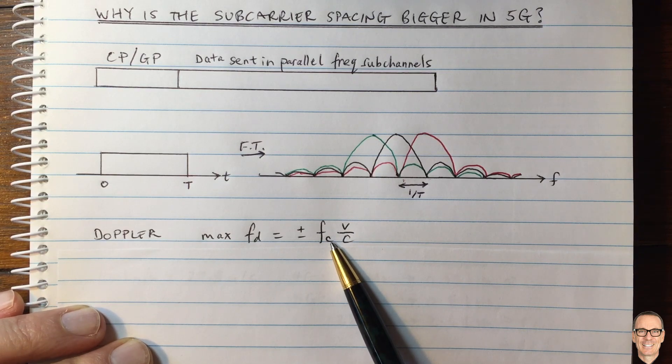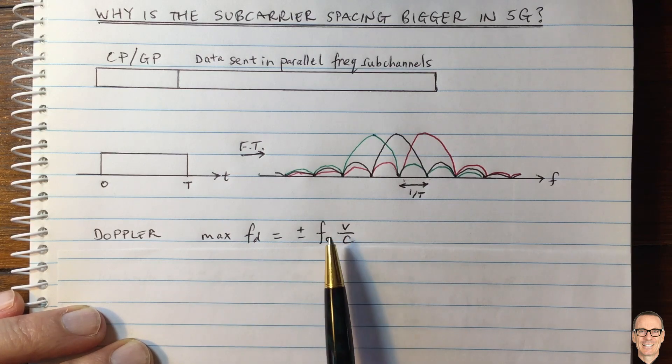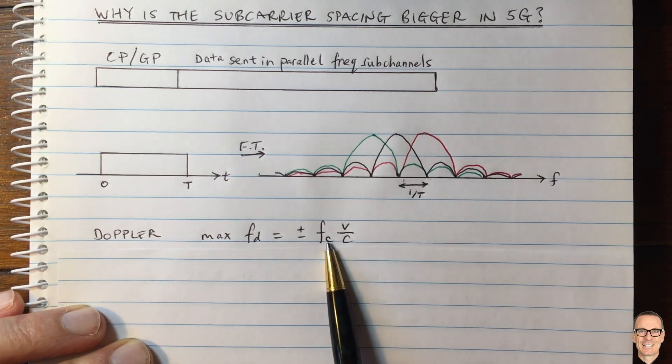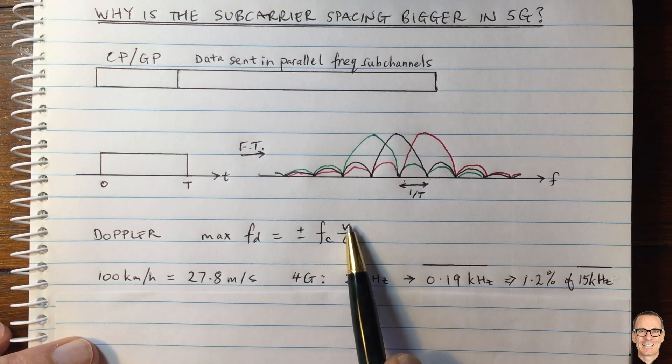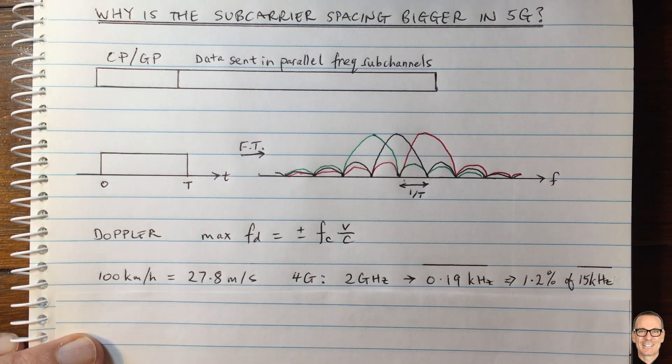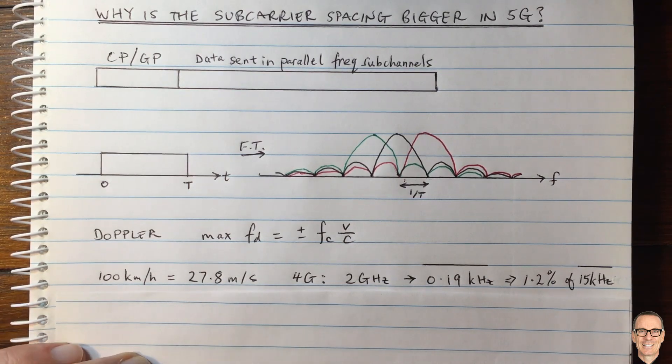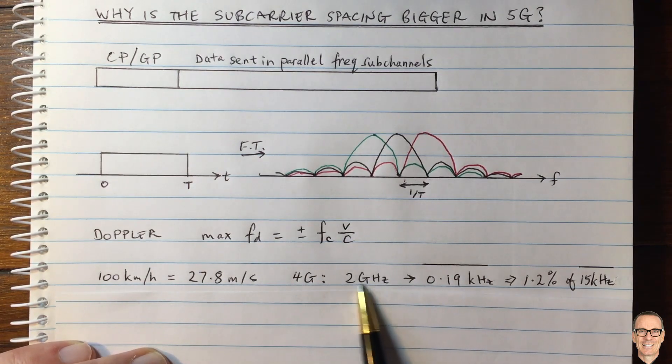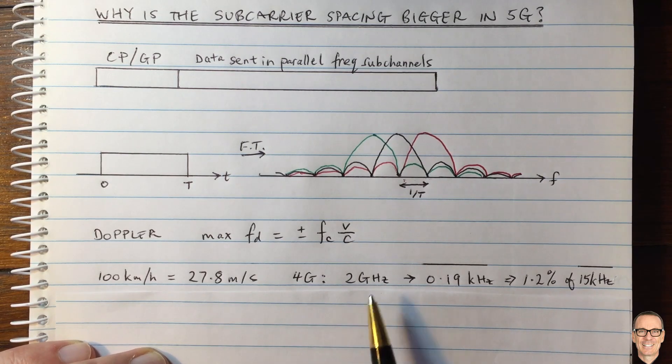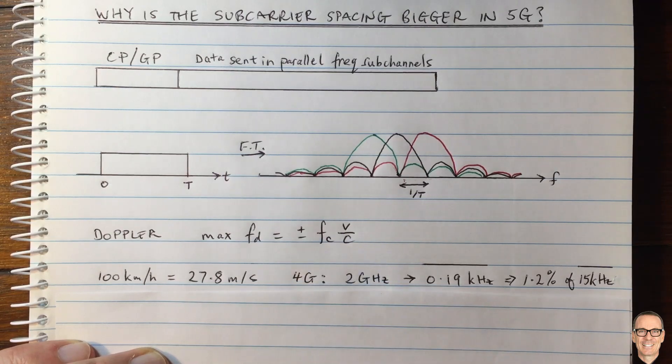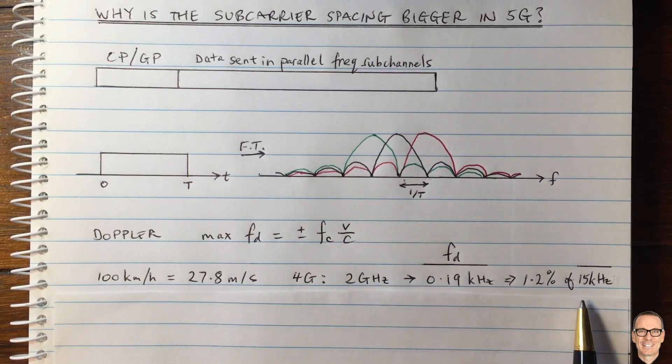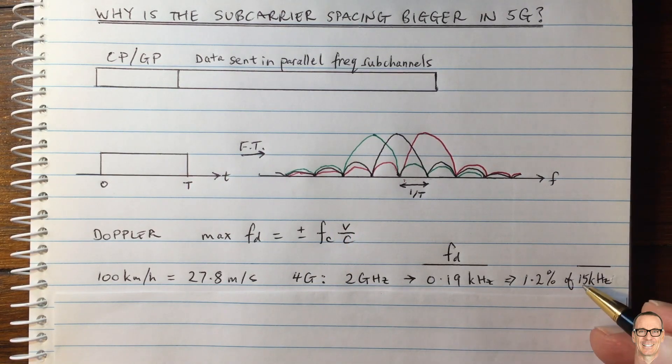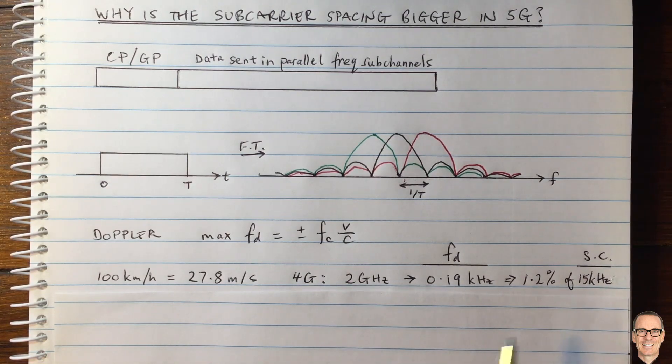And for more videos on this, check out the description below this video. So the Doppler depends directly on the carrier frequency. So let's look at some examples. Let's say we were going at a speed of 100 kilometers an hour on a highway, for example. Well, this corresponds to 27.8 meters per second. And let's look at the 4G system, where the carrier frequency is around about typically 2 gigahertz. So with these two numbers in this formula, it gives us a maximum Doppler shift of 0.19 kilohertz. And in the 4G standard, the sub-channels are 15 kilohertz apart.